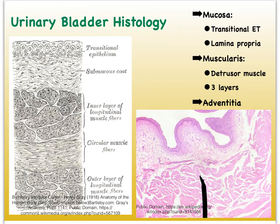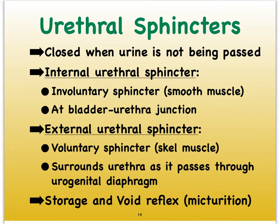The internal urethral sphincter is made up of smooth muscle and is therefore under control of the autonomic nervous system, while the external urethral sphincter is controlled by the somatic nervous system because it is skeletal muscle — meaning we have voluntary control over it. This leads us to two reflexes: the storage reflex and the void or micturition reflex, which kicks in when we actually want to urinate.